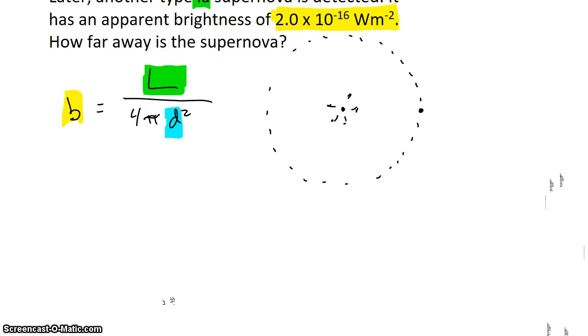So if we rearrange this equation to solve for the luminosity, we get that the luminosity is the apparent brightness times 4πd². That's going to be true for the case of the first supernova, and it's going to be the same luminosity in the case of the second supernova.